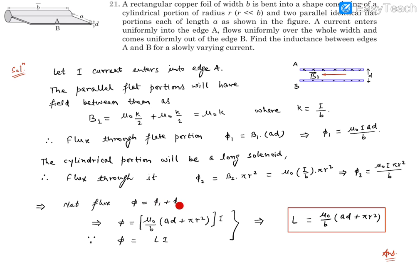We can add these two. It turns out to be φ equals μ₀/b times (ad + πr²) times I. We can take μ₀/b as common.